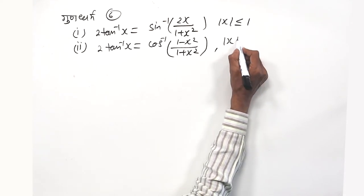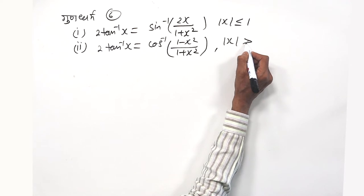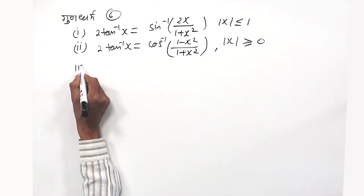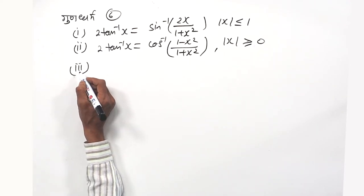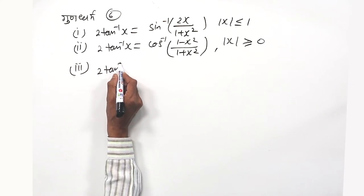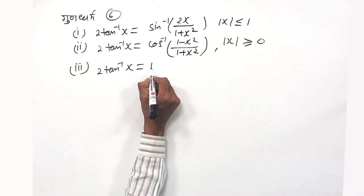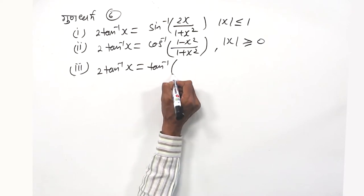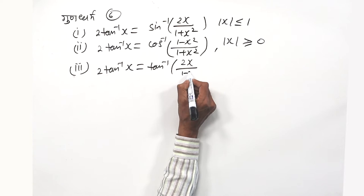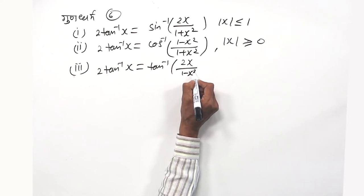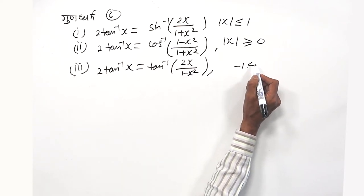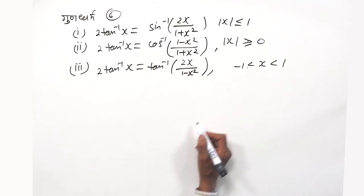Where mod of x is greater than or equal to 0. And the third rule is: 2 tan⁻¹x is equal to tan⁻¹ of 2x upon 1 minus x square, where minus 1 is less than x is less than plus 1.